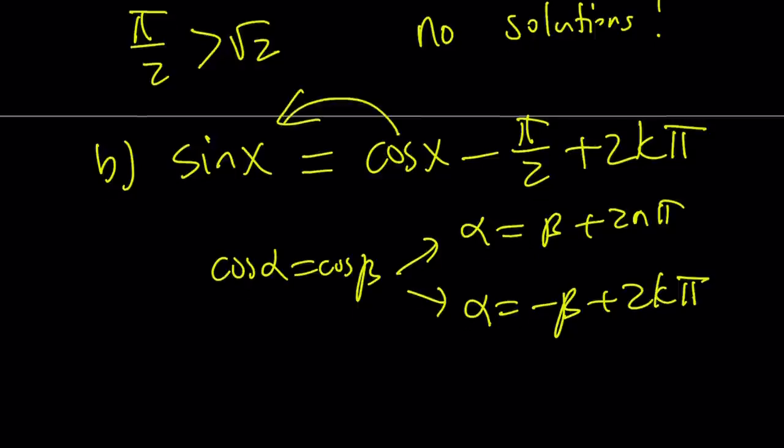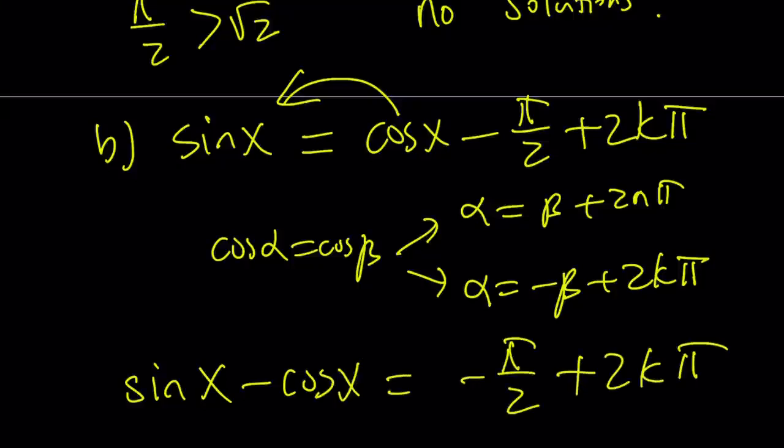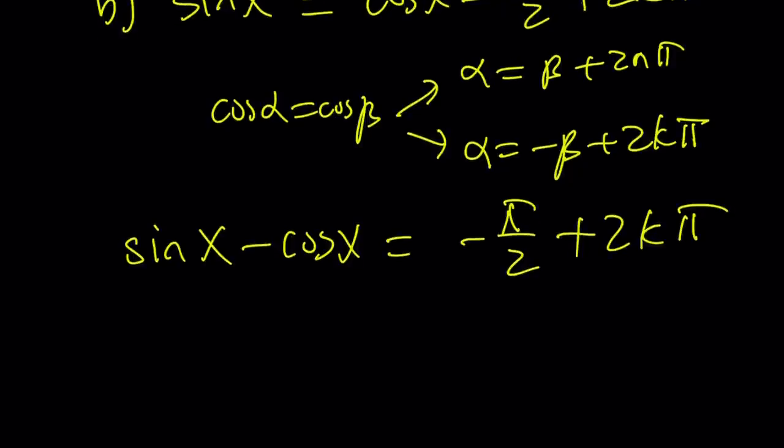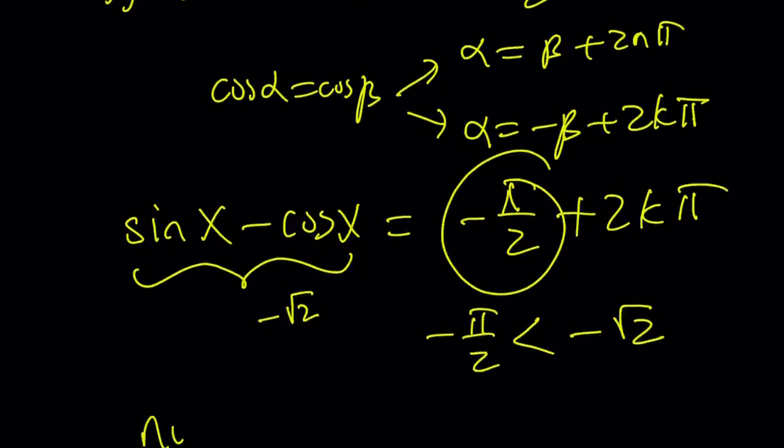So, if you proceed with this one, like before, subtract cosine x from both sides. You're going to get sine x minus cosine x equals negative pi over 2 plus 2k pi. Now, we didn't do it, but it's very similar. However, to find the minimum and maximum value for sine x minus cosine x, you're going to get the same thing, pretty much. The minimum value for this is going to be negative root 2. But, negative pi over 2 is definitely less than that, because pi over 2 is greater than root 2. Therefore, this branch is also impossible. Therefore, there are no solutions to this equation.